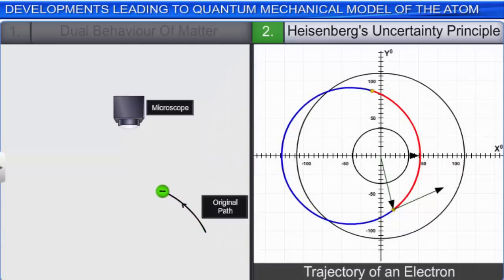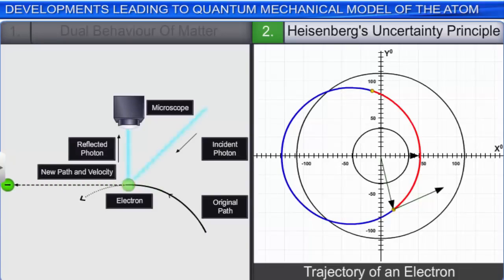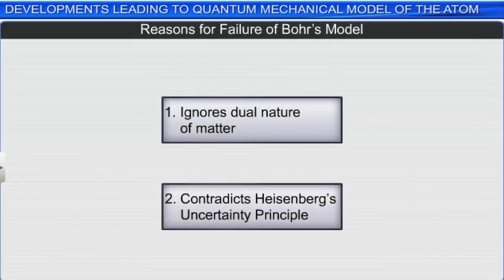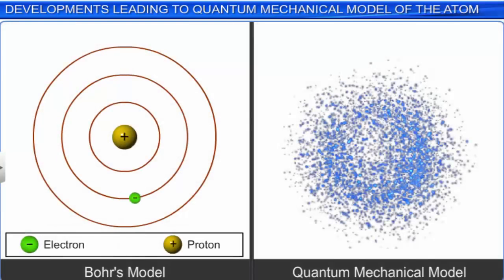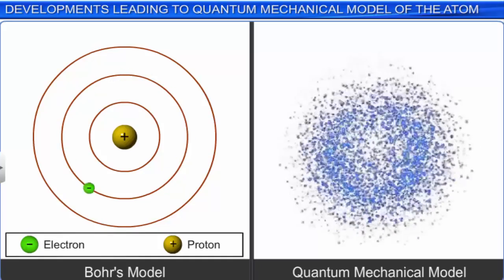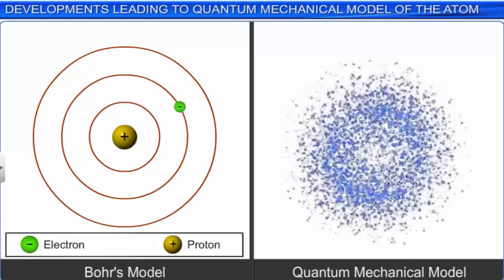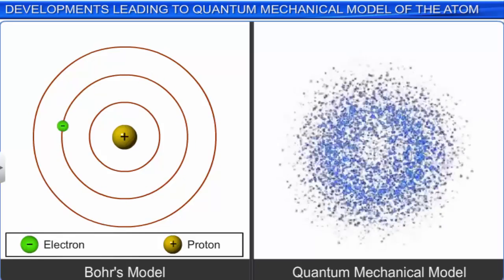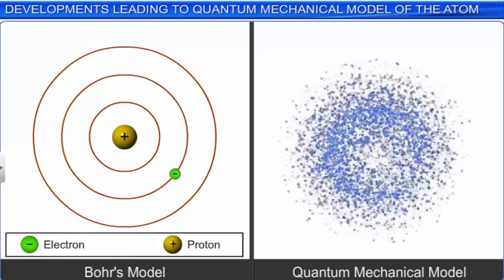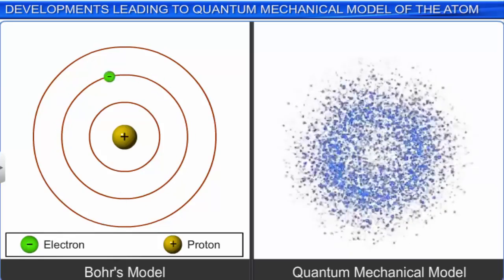As it is impossible to determine simultaneously and accurately the position and velocity for an electron at any given instant, it is not possible to talk about the trajectory of an electron. Thus, Bohr's model not only ignores the dual nature of matter but also contradicts Heisenberg's uncertainty principle. Due to these inherent weaknesses in Bohr's model, a need arose for an atomic model which could account not only for the dual nature of electrons but also be consistent with Heisenberg's uncertainty principle. This search led to the advent of quantum mechanics.